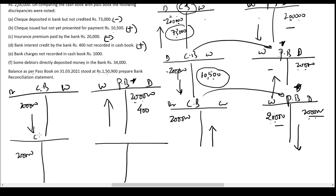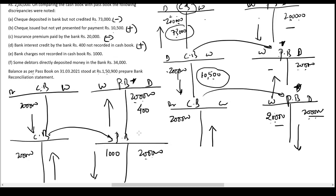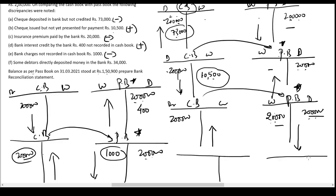Bank charges not recorded in the cash book — 1,000. Bank charges are debited in the passbook as a withdrawal, so the passbook balance reduces. The cash book balance is higher comparatively. To make the cash book balance equal to the passbook balance I have to reduce it by 1,000 — so I'll write less here.